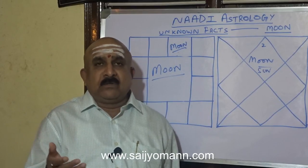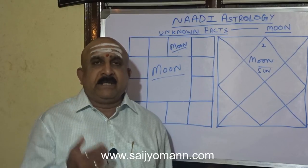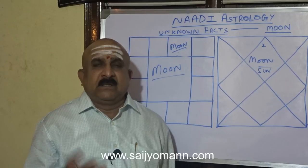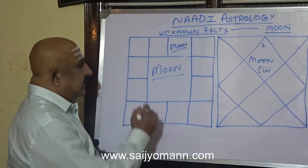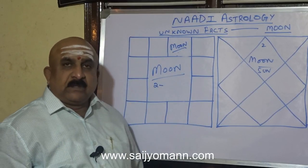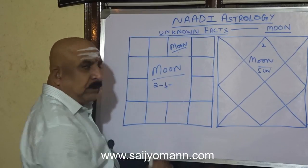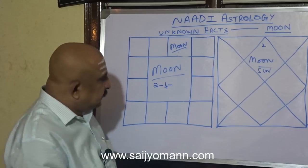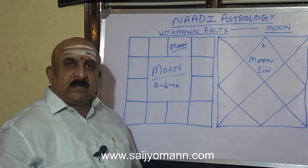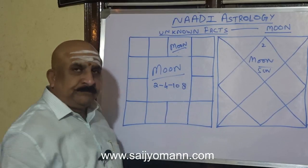To know more about the mother — if you want to know about speech, money, or her happiness, we take the 2nd house from Moon. For her mother, the 4th house from Moon. For her father, the 10th house from Moon. For her longevity, the 8th house from Moon.